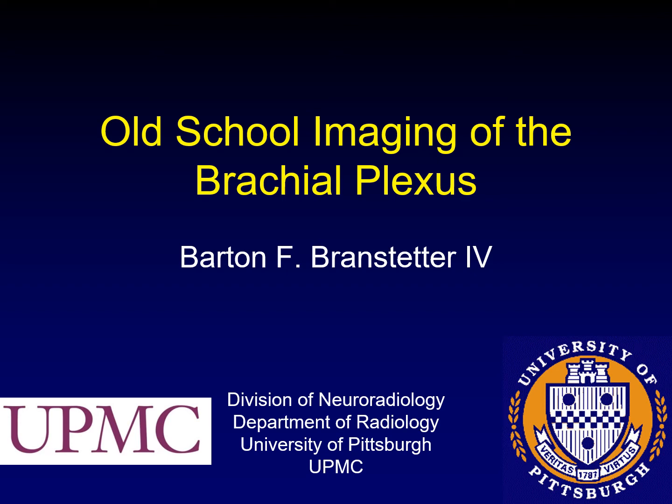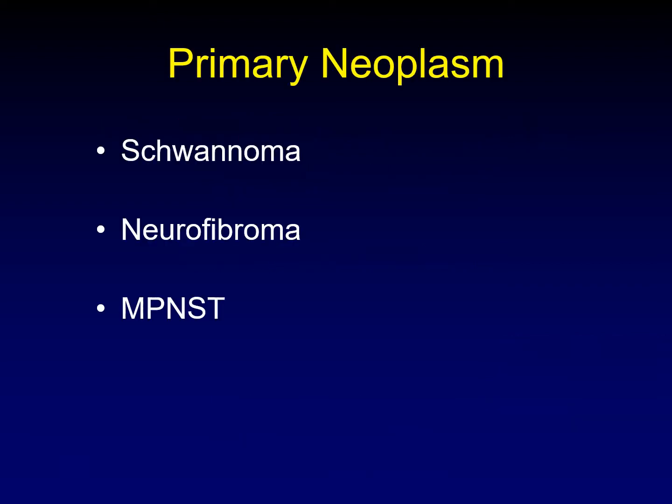This is the second half of the lecture on brachial plexus imaging. Let's move on to neoplasms. We're going to talk about primary neoplasms first — mostly schwannomas, neurofibromas, and malignant peripheral nerve sheath tumors, which is the blanket term for the malignant version of both schwannomas and neurofibromas.